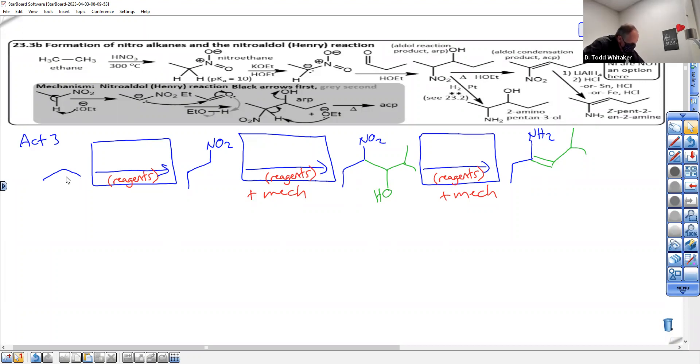So when we need to make a nitroalkane, we're just going to copy what we see here. HNO3, 300 degrees Celsius. Just copy. Every alkane is a little different, so why don't you just put the big old triangle there so you don't have to memorize the number either.